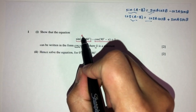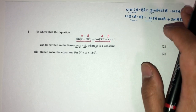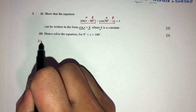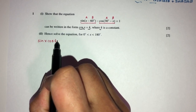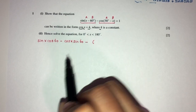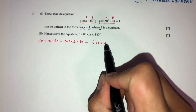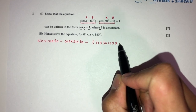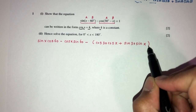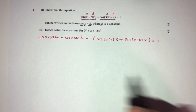Treating these as A and B, we replace them back into the formulas. The first term, sin(A − B), becomes sin x · cos 60° − cos x · sin 60°. Make sure to include the brackets properly. The second term, cos(A − B), becomes cos 30° · cos x + sin 30° · sin x. Both expressions are on the same side of the equation.